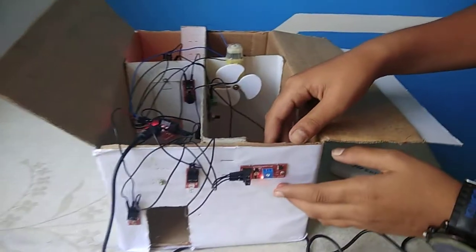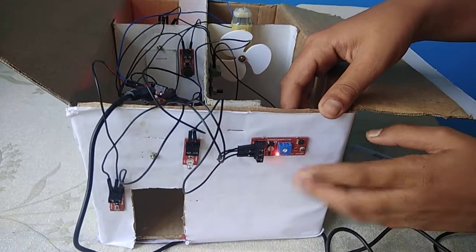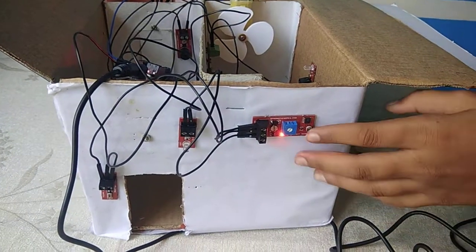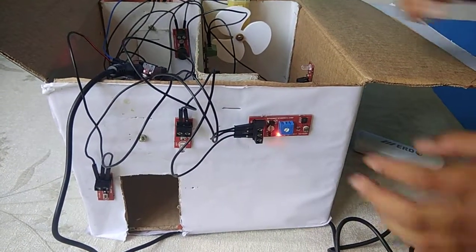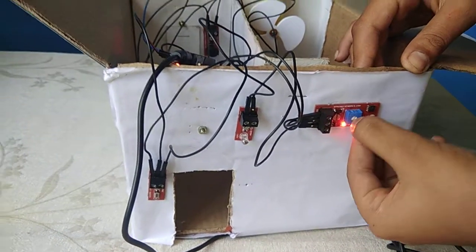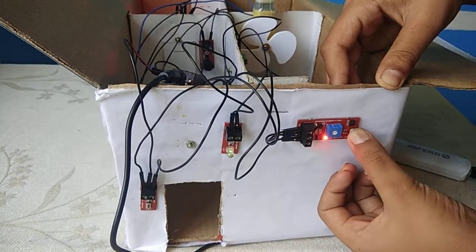Another thing I have used is the LDR, which is a light sensor. When you go off at night and come back, we can't go inside and turn on the light manually. So this is an automatic light sensor.